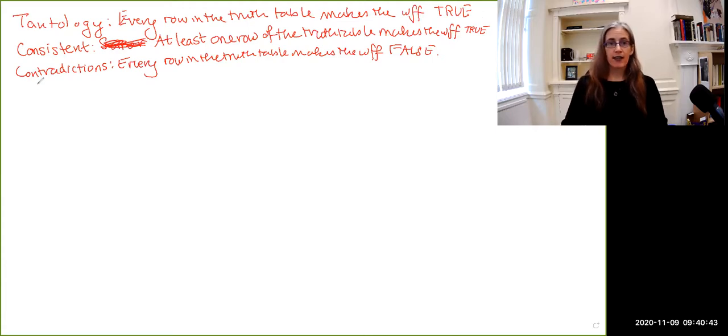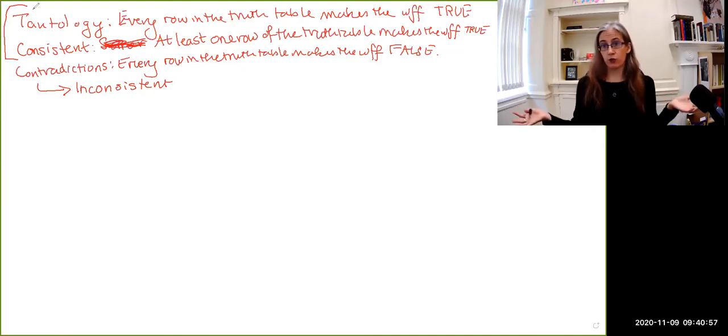Contradictions, because none of the lines in the truth table make the formula true are also going to be known as inconsistent. So the consistent formulas are the merely consistent, which have some true, some false, and also the tautologies. If every row of the table is true, then at least one of them is true. And then we have the kind of contradictions and the inconsistencies on the other side.